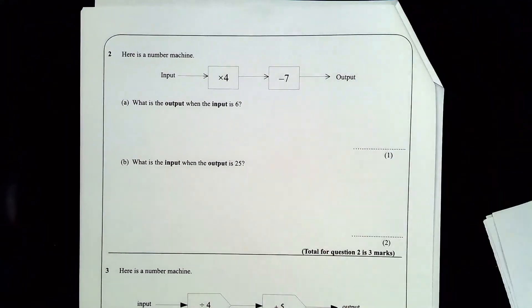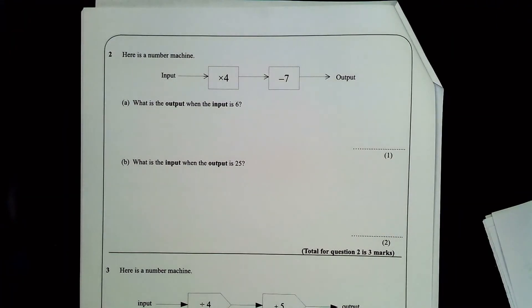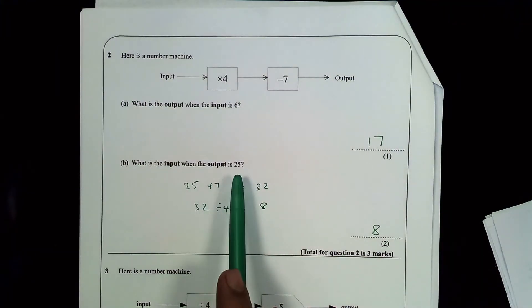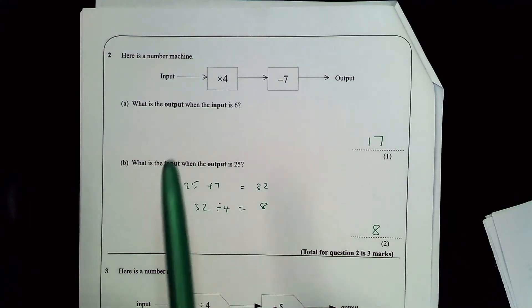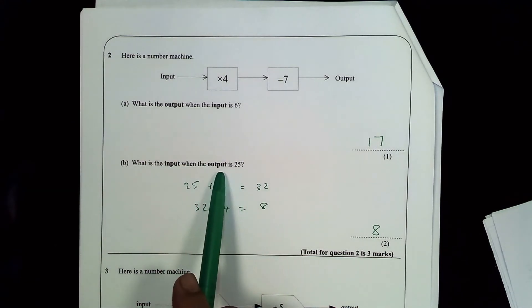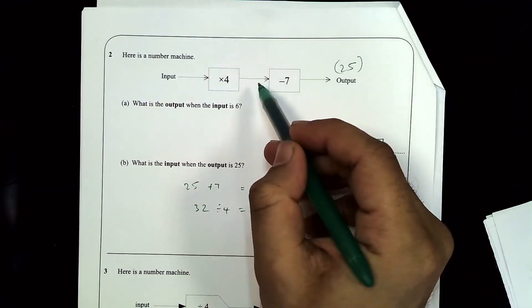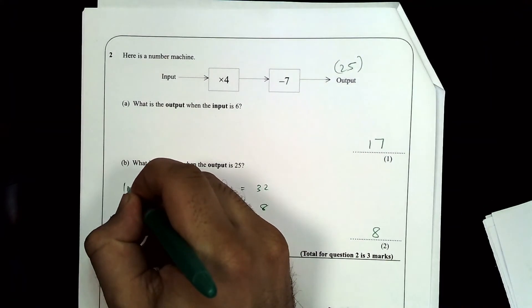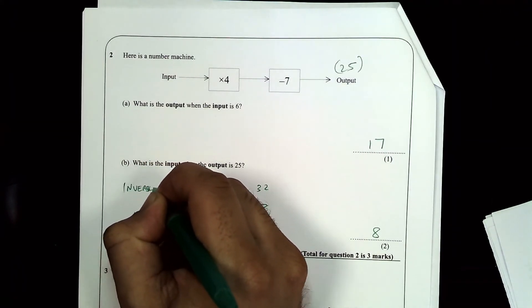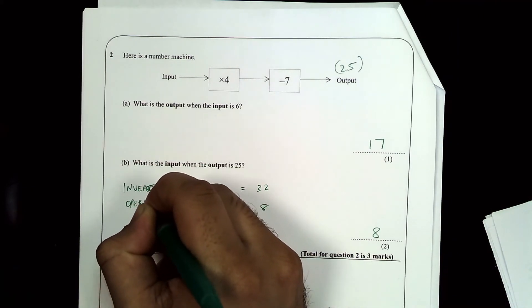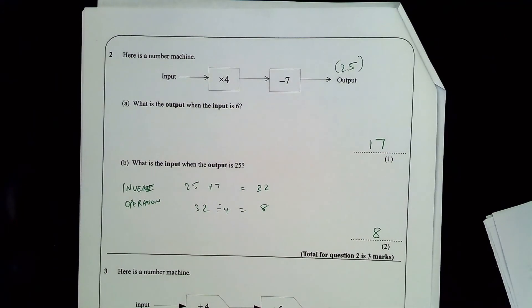I'd like you to have a go at this one yourself now. Please pause the video and have a go. When you're working out the input from the output, so if I know that 25 came out of the machine, then to go backwards, like I said, you do the inverse operation. I'd just like you to remember that. Inverse, which is another word that basically means opposite. Inverse operation.